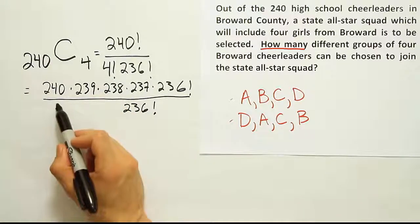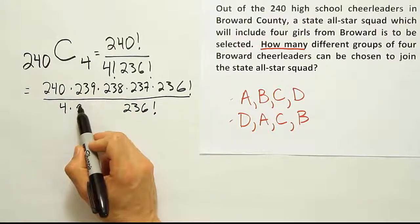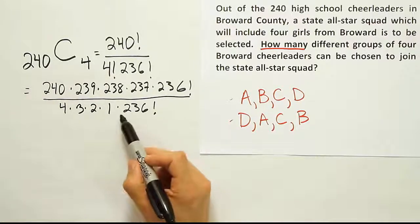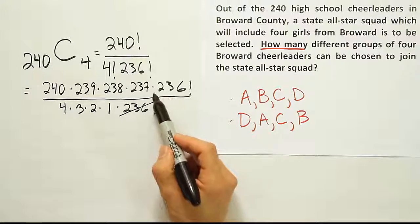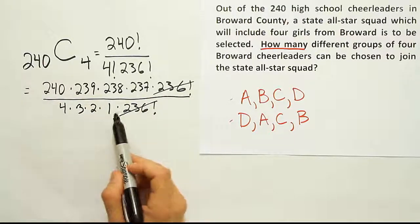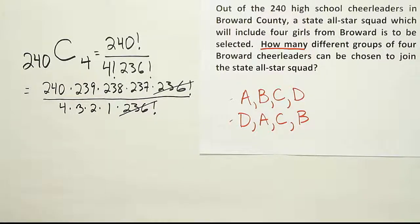And now 4 factorial in front of that can be just written as 4 times 3 times 2 times 1. And then what happens is that 236 factorial can cancel with that 236 factorial. And I have these four numbers multiplied divided by these four numbers multiplied. And that will finish the problem.